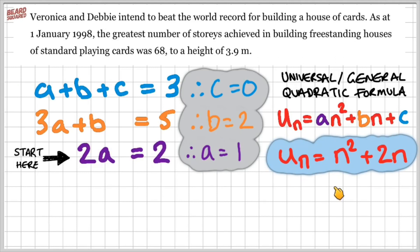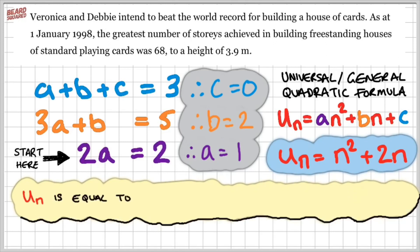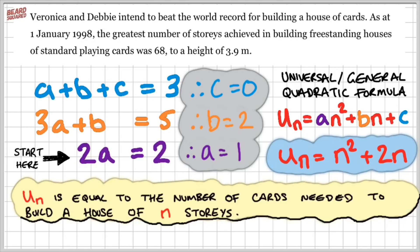This is the formula now to find any term in our sequence. In other words, un is equal to the number of cards needed or required to build a house of cards with n stories. So un is the number of cards that we require and n is the number of stories of the house.